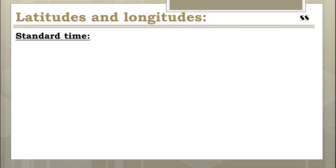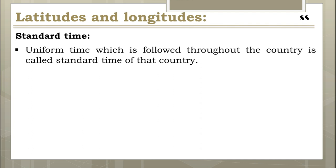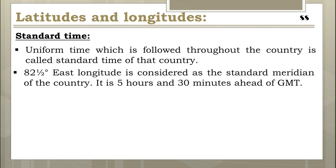Now let's know about standard time. As local time varies from place to place, it would create considerable confusion if each place were to follow its own local time. To avoid confusion, many countries follow a uniform time throughout the country, based on the central meridian of the country or the meridian on which the most important city is located. This uniform time is called the standard time of that country. In India, 82.5 degrees east longitude is the standard meridian, passing through Allahabad in Uttar Pradesh. The time based on this meridian is called Indian Standard Time (IST), which is 5 hours and 30 minutes ahead of GMT.